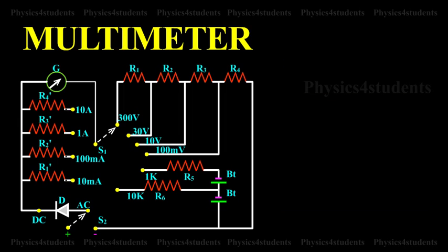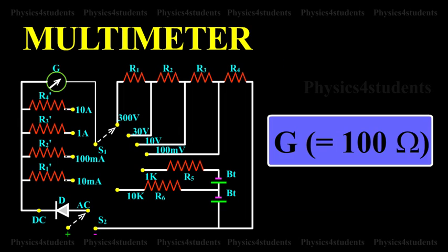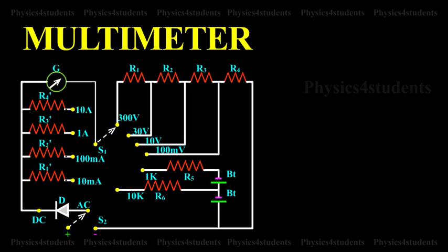Let us consider a galvanometer of resistance G, equal to 100 ohms, which gives a full-scale deflection for 1 milliampere.